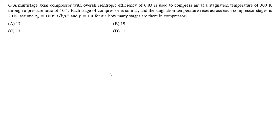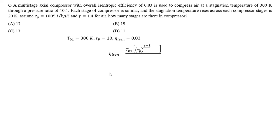Stagnation temperature T01 at the inlet is equal to 300 Kelvin. Pressure ratio RP = 10 and isentropic efficiency = 0.83. We know the relationship: isentropic efficiency = T01 × (RP^((γ−1)/γ) − 1) / (T02 − T01), where T02 is exit stagnation temperature and T01 is inlet stagnation temperature.